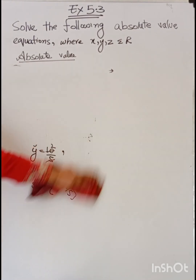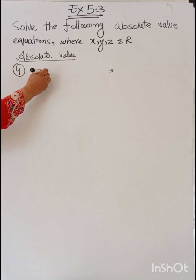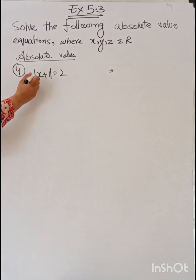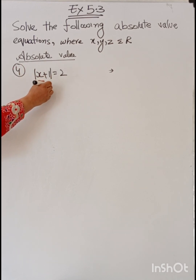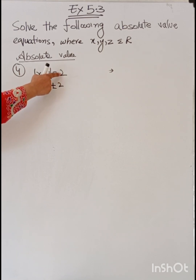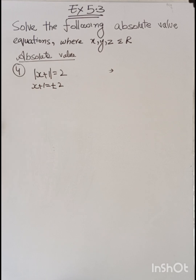Question number 4: absolute value of (x + 1) equals 2. Questions 4 and 5 are easy and solve the same way. Remove the absolute value bars and write the equal value as plus minus. To do so, the value on the equal side must be positive. If it is positive, we proceed; if negative, there is no solution.